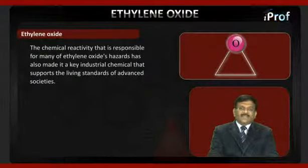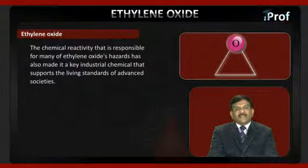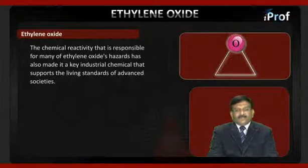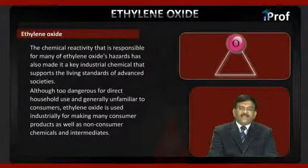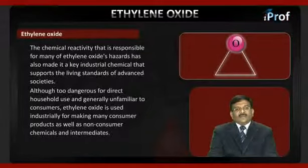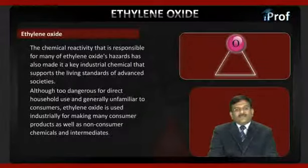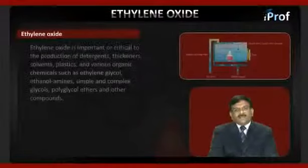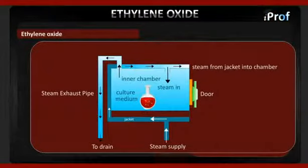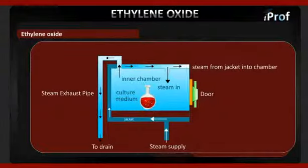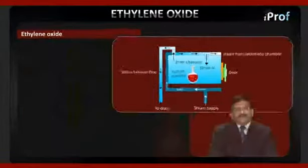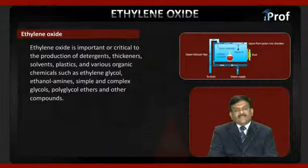The chemical reactivity responsible for many of ethylene oxide's hazards has also made it a key industrial chemical supporting the living standards of advanced societies. Although too dangerous for direct household use and generally unfamiliar to consumers, ethylene oxide is used in industry for making many consumer products as well as non-consumer chemicals and intermediates, including detergents, thickeners, solvents, plastics, ethylene glycol, ethanol amines, simple and complex glycols, polyglycol ether, and other compounds.